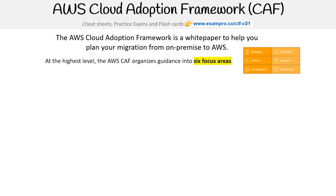At the highest level, the AWS CAF organizes guidance into six focus areas: business, people, governance, platform, security, and operations. This white paper is pretty high level — it doesn't get into granular details on how that migration should work, but gives you a holistic approach. Through the AWS Amazon Partner Network, there are people that specialize in using this framework to help organizations move over, and there are professional services through the APN.